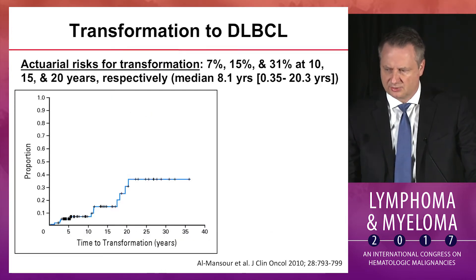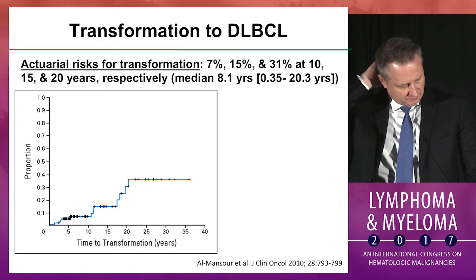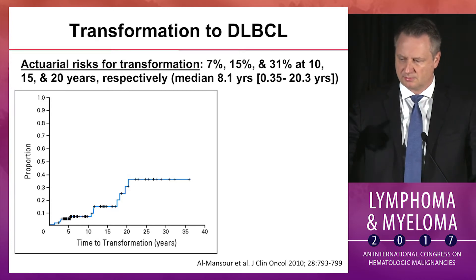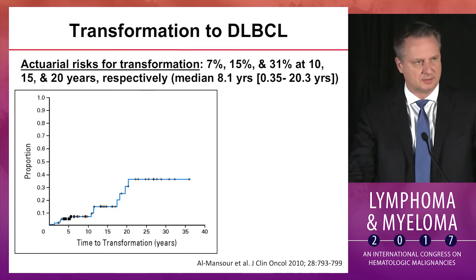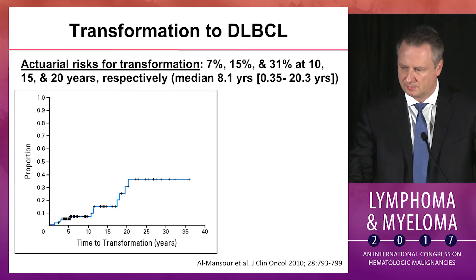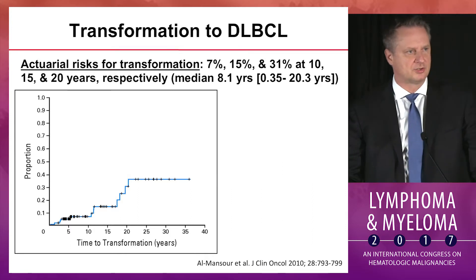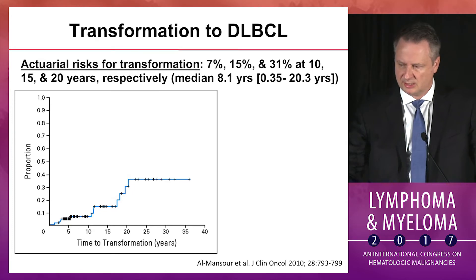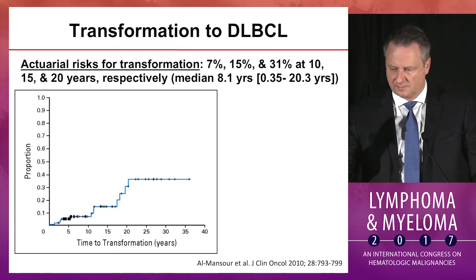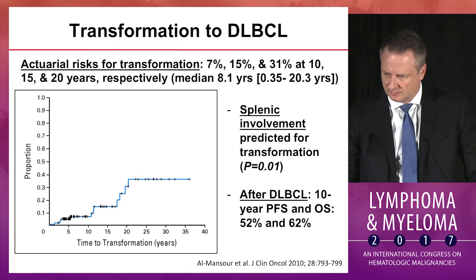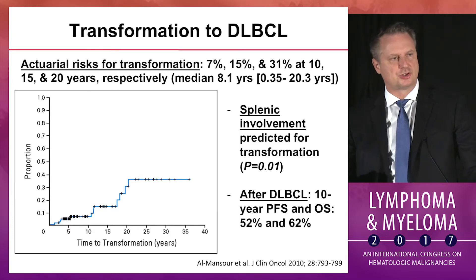One of the higher transformation publications — a retrospective study from British Columbia — showed actuarial transformation risks of 7%, 15%, and 31% at different time points. Everyone has shown there is really a plateau: if you live 20 years with this disease, it's probably not going to transform after that. But there is roughly a small increase in transformation risk every five years.